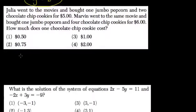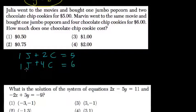Julia went to the movies and bought one jumbo popcorn plus two chocolate chips for $5. Marvin went and bought one jumbo and four chocolate chip cookies for $6. How much does one chocolate chip cookie cost?